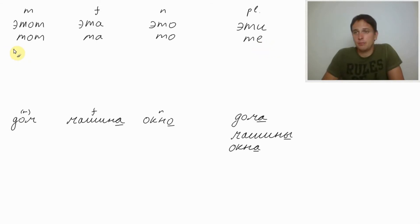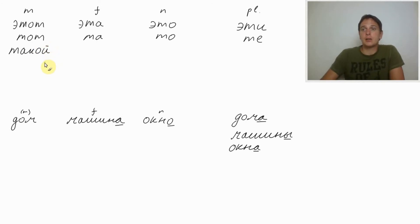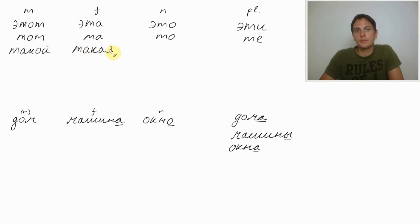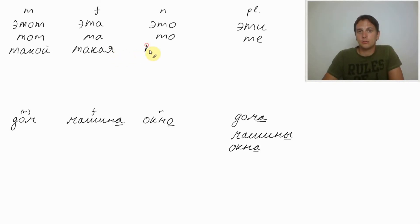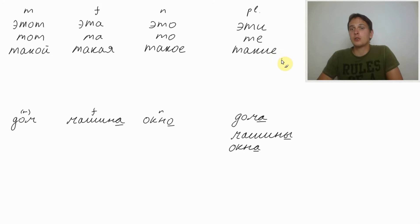Now: такой (takoy) — this kind of. Такой дом — this kind of house. For feminine: такая (takaya). Такая машина — this kind of car. For neutral: такое (takoye). Такое окно — this kind of window. For plural: такие (takiye). Такие дома — this kind of houses; такие машины — this kind of cars; такие окна — this kind of windows.